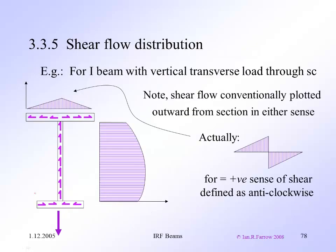For an I beam with a vertical transverse load through the shear center, the shear flow distribution looks like this: zero at the edges, increasing to a maximum at the middle of the web. Note that we conventionally plot it outward from the section in either sense. If you were following a positive anti-clockwise sense of shear, then it'd actually be in the opposite sense on either side of the web.